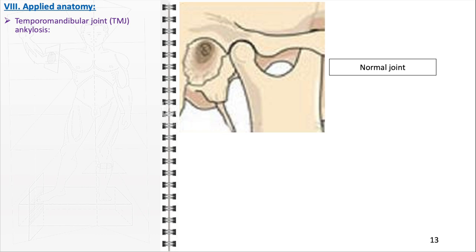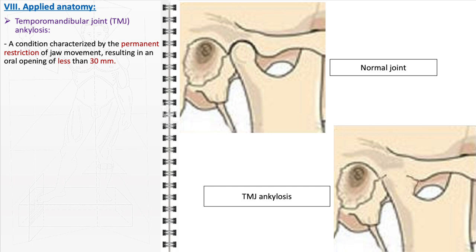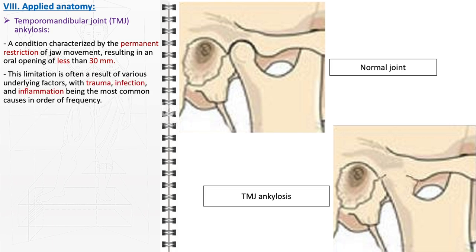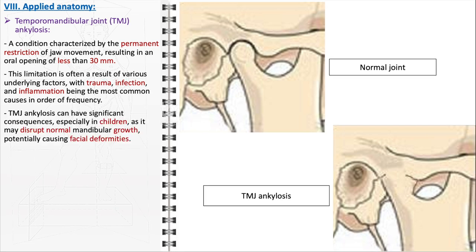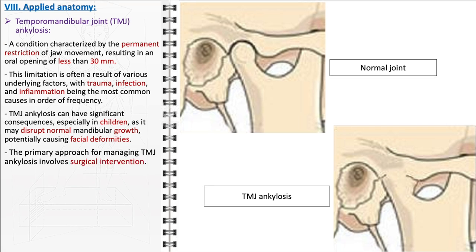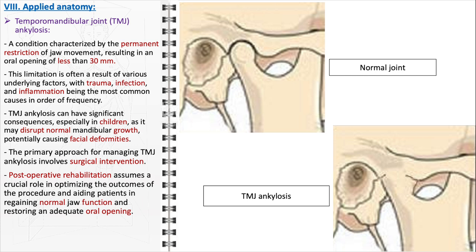Common disorders affecting the temporomandibular joint include temporomandibular joint ankylosis, a condition characterized by the permanent restriction of jaw movement resulting in an oral opening of less than 30 millimeters. This limitation often stems from trauma, infection, and inflammation, in order of frequency. TMJ ankylosis can have profound consequences, particularly in children, as it has the potential to disrupt normal mandibular growth, potentially leading to facial deformities. The primary management approach involves surgical intervention, with post-operative rehabilitation playing a crucial role in regaining normal jaw function and restoring adequate oral opening.